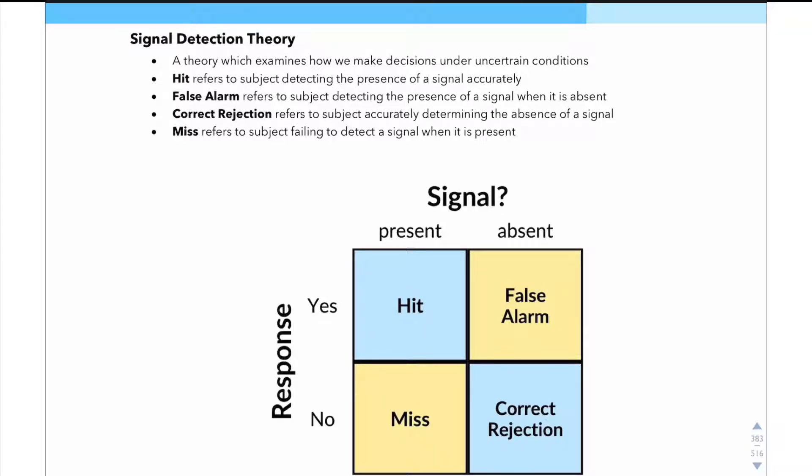So we'll start with a definition. Signal detection theory is a theory which examines how we make decisions under uncertain conditions. So what exactly does this mean? Well, really, you just need to be familiar with the terminology that goes with signal detection theory, and you'll be able to get most questions right. So we'll go over that terminology, and then we'll use an example.